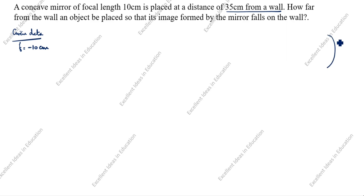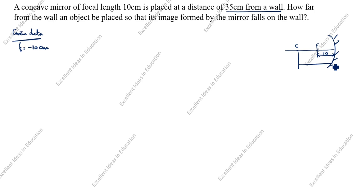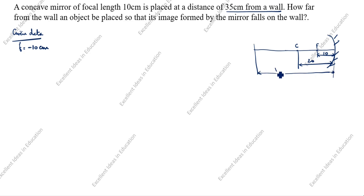I'll draw the diagram and show you. The distance is 35 centimeter. We know the focal length value — focal length is 10, so the radius of curvature is double, which means it comes to 20. The mirror is 35 centimeter from a wall, so this value is negative, and v is equal to negative 35 centimeter.